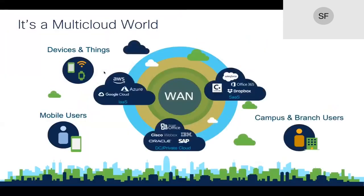We all agree there is a movement of applications from the data center to cloud. We used to have approximately 80% of traffic going to the data center and 20% going to the internet — that was about 10 years ago. Now we've moved to the opposite: approximately 80% is going to the internet and 20% to the data center. The concept of the data center gateway is no longer as useful. We need to ensure whatever we send to the internet is secure without compromising performance, for mobile users or users accessing SaaS services.